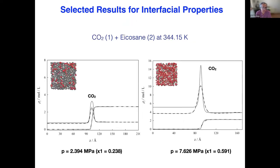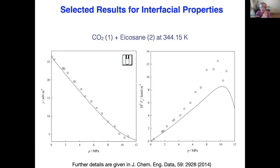A second example is CO2 plus acetone, where we can see the effect of increasing pressure or mole fraction of CO2. Both approaches predict very well the enhancement of the surface activity of CO2 in the interfacial region. These results have also been compared with experimental data, showing very good agreement between experimental data, molecular simulation, and theory for both the interfacial tension and the Gibbs adsorption. References are provided at the bottom of the page.